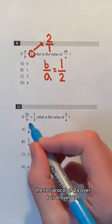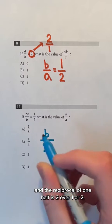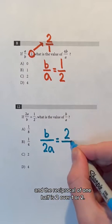For the second question, the reciprocal of 2A over B is B over 2A and the reciprocal of 1 half is 2 over 1 or 2.